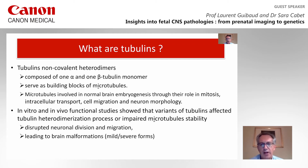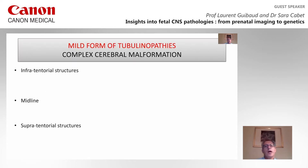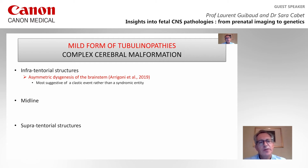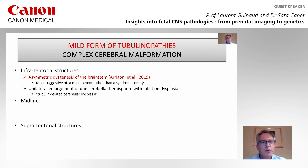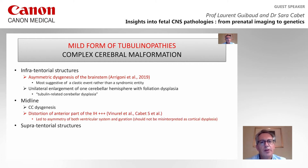It leads to brain malformations with mild and severe forms. We just showed a case of mild form of tubulinopathies, which are complex cortical malformations involving infratentorial and supratentorial structures as well as the midline. A very specific feature is this asymmetric dysgenesis of the brainstem. The asymmetry can be on the cerebral hemispheres with unilateral enlarged hemispheres with folial dysplasia. As in our case, there was a short corpus callosum, but corpus callosum dysgenesis is not a specific finding.